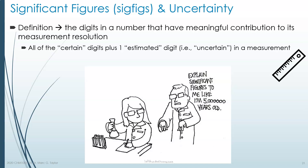Sig figs are the digits in a number that have meaningful contribution to its measurement resolution. In other words, the digits in a number that actually mean something, that you can actually trust. That's typically all of the certain digits — the ones you absolutely know for sure — plus the last digit that would be estimated when you're using some type of instrument to measure something.